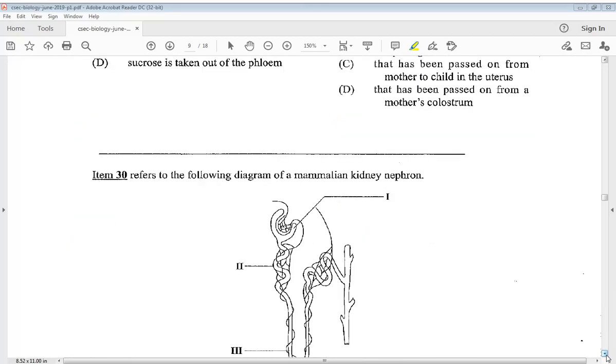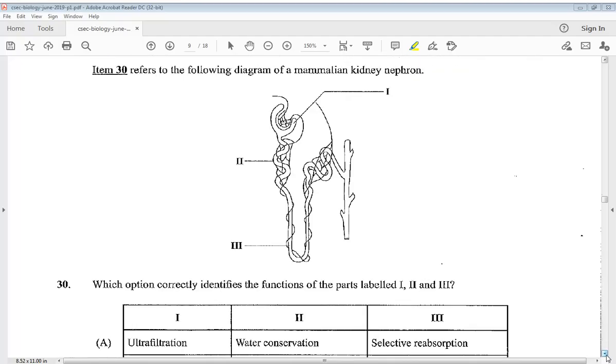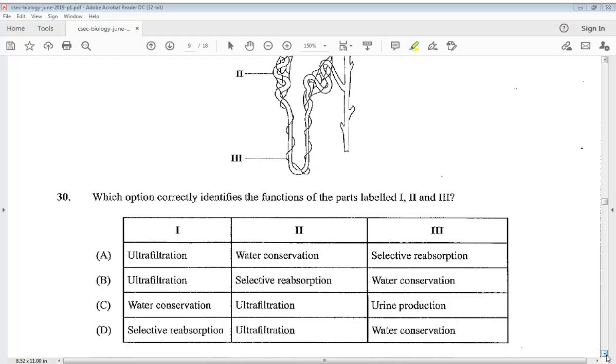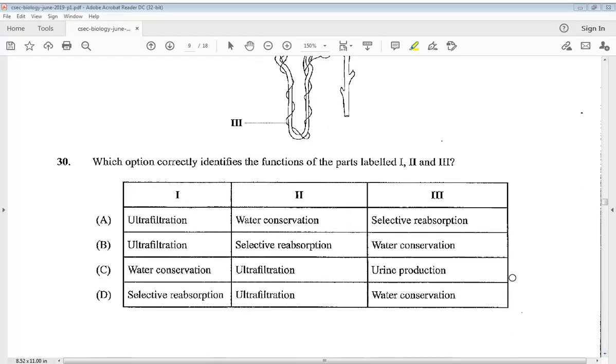Final question for part one. Item thirty refers to the following diagram of a mammalian kidney nephron. Which option correctly identifies a function of the parts labeled 1, 2, and 3? At 1 is ultrafiltration, at 2 we have selective reabsorption, and 3 is water conservation. B would be your answer. So there you have it. We have come to the end of the CSEC Biology May June 2019 Paper 1 part one. Make sure to subscribe to know when part two is out. Thanks for watching.